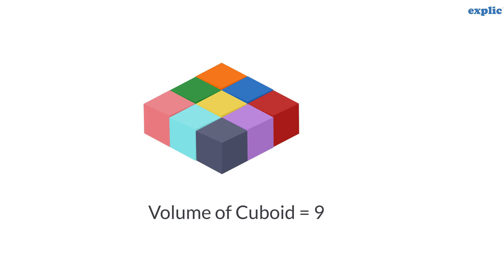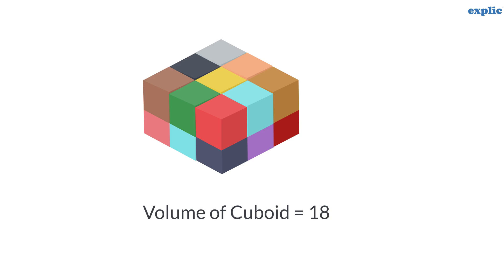Similarly, the volume of a cuboid made of 9 unit cubes is 9. And the volume of a cuboid made of 18 unit cubes is 18.